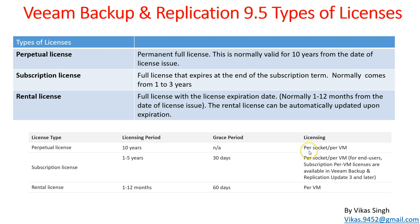For licensing models: perpetual licenses are sold per socket or per VM. If your server has two sockets, you buy two socket licenses, or you can buy per VM — for example, 10 VM licenses for a server running 10 VMs. Subscription licenses also come per socket or per VM. Per-VM subscription licenses are available in Veeam Backup and Replication Update 3 and later. Rental licenses are VM-based only.